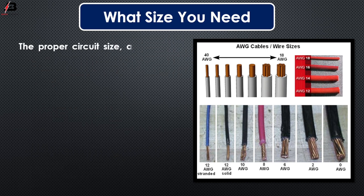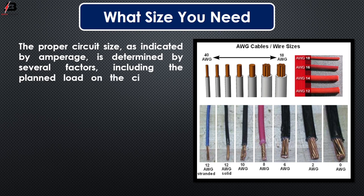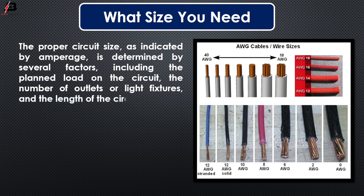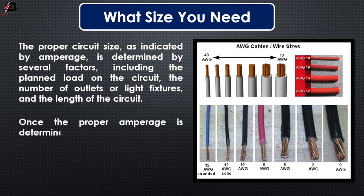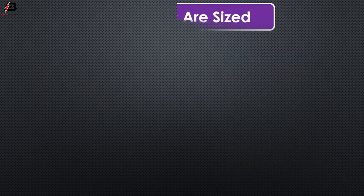The proper circuit size, as indicated by amperage, is determined by several factors including the planned load on the circuit, the number of outlets or light fixtures, and the length of the circuit. Once the proper amperage is determined, it is critical that the oil gauge used in the circuit is appropriate for the amperage of the circuit breaker.